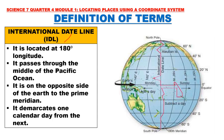The International Date Line, or IDL, is located at 180 degrees longitude. It passes through the middle of the Pacific Ocean. It is on the opposite side of the Earth from the prime meridian. It demarcates one calendar day from the next. Passing through the IDL going to the east means you add one day; passing through going to the west means you subtract a day.